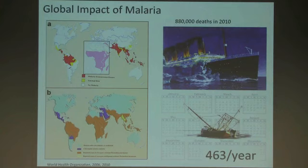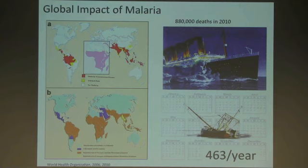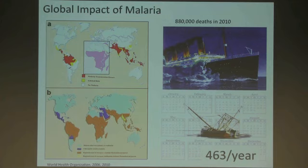When we talk about the global impact of malaria, malaria puts 40% of the world's population at risk. There are 300 to 500 million clinical cases of the disease a year. Around the world, it kills more than a million kids under the age of five. In 2010, the World Health Organization said that 880,000 children died in Sub-Saharan Africa.